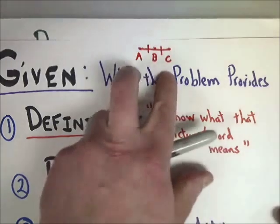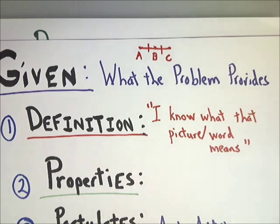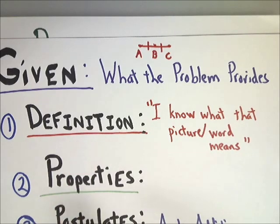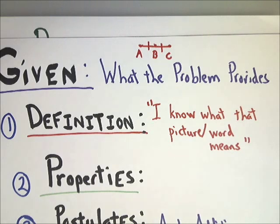Say they give you an X value for AB like 2X plus 5, and another for BC like 3X plus 9. You need to find the value of X, and you have to prove why it happens. There are three ways to do that. The first is knowing definitions. If the given says B is the midpoint, the reason AB equals BC is the definition of a midpoint - it breaks a segment into two equal parts. That's your justification.